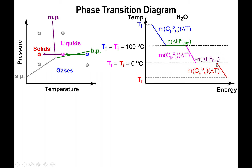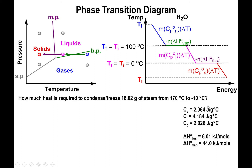After passing through both horizontal plateaus, we can go directly from the melting point down to the final temperature. Since this is a change in temperature, we use q = mcΔT, and specifically we use the heat capacity of the solid, since we are now lying below the melting point.